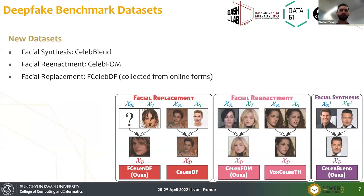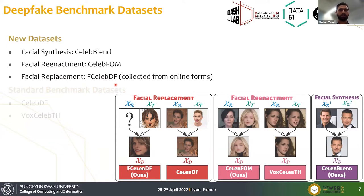We used different benchmark datasets — we made two benchmark datasets, one for each category. For facial synthesis, we made the SelectBlend dataset, and for facial reenactment, we made the SLAP-FOM dataset. We also collected a facial replacement dataset from online sources. Additionally, we use two standard benchmark datasets: LADF and VoxLABDF. Links for all of them are provided on our GitHub page.